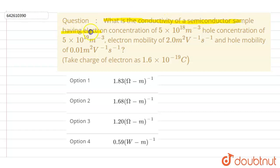of a semiconductor sample having electron concentration of 5 × 10^18 per meter cube, hole concentration 5 × 10^19 per meter cube, and mobility of electron and hole are also given here.